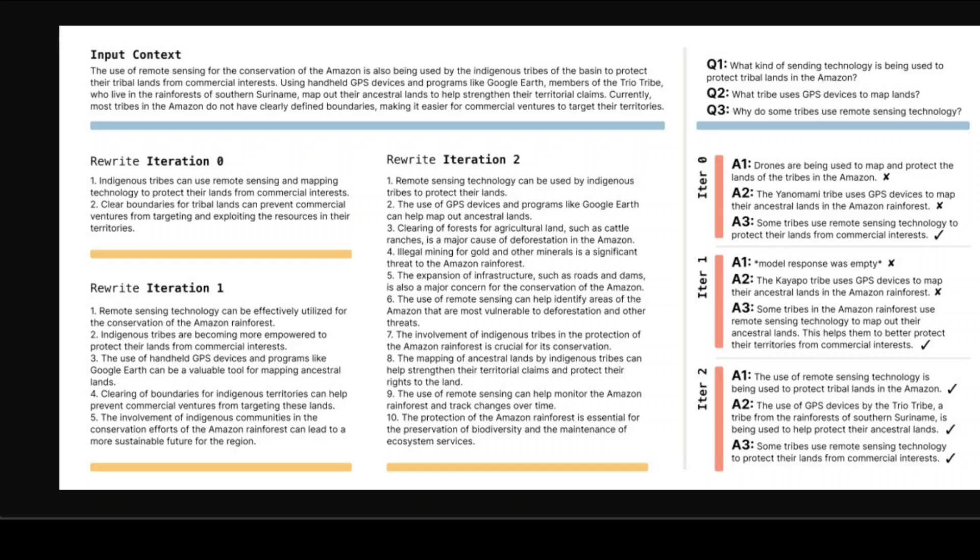For few-shot learning, SEAL achieved a really staggering 72.5% success rate compared to just 20% for models using random configurations. That shows it really learned how to configure the adaptation process effectively.